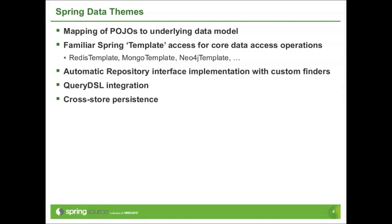Some of the major themes you'll see across the Spring Data projects include the mapping of POJOs to the underlying data model, which makes it much easier to go from the classes you're used to coding in your domain to storage. If you've used Spring at all, you're used to hearing about JDBC template or JMS template or REST template — this template callback style API is also preserved in the Spring Data projects. So we have things such as Redis template, Mongo template, and Neo4j template to make it very easy to do the easy stuff in a one-liner.